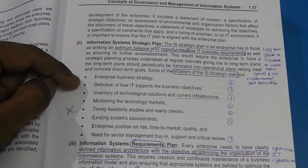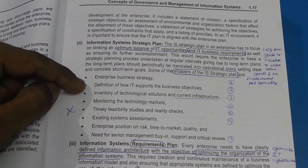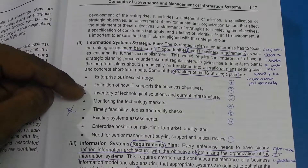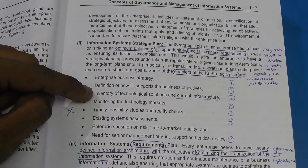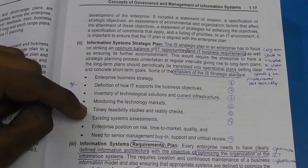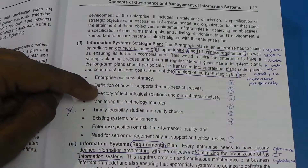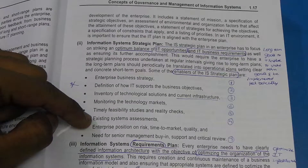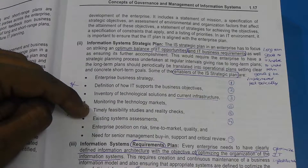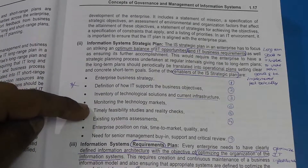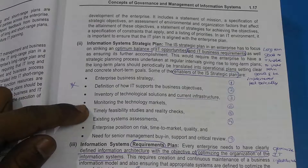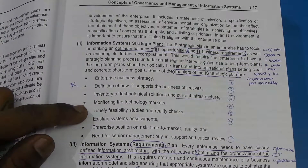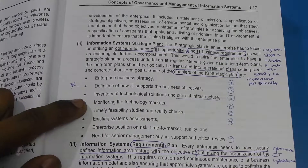First we will have the Enterprise Business Strategy. Then point 2 is the definition of how IT should support those business objectives. Point 3 is the Inventory of technological solutions and current infrastructures — what we have at the moment. Point 4 is Existing Systems Assessments, an assessment of the capabilities of what we currently have. Point 5 is Timely Feasibility Studies and Reality Checks, which should be conducted regularly to see where the enterprise stands and what the current IT system capability is.